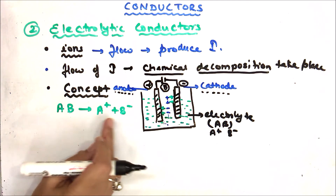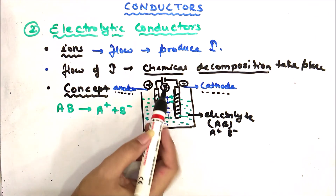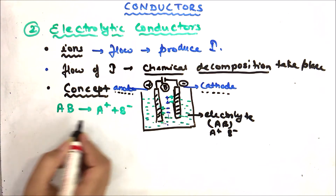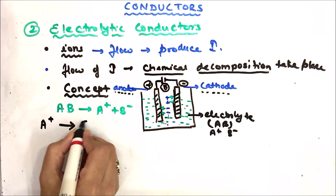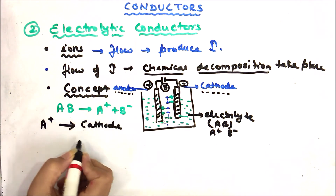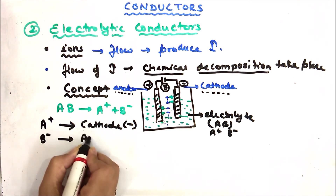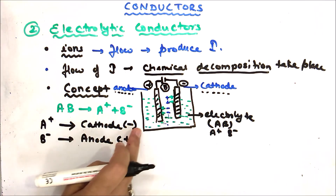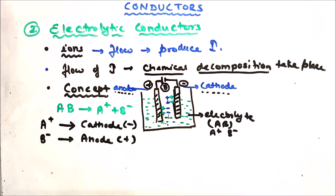In the solution, A⁺ ions will move toward the negative electrode, which is the cathode. And B⁻ ions will move toward the anode, which is positive. When these ions move toward their respective electrodes, they create a reaction.